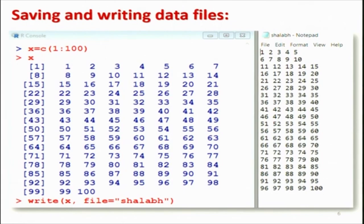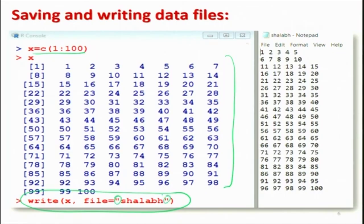Let's look at our console and show you a screenshot of what happens. First, you change the working directory. After that, we generate the value of x — the value of x is 1 to 100. Then we write: write(x, file="shalabh"). When you look in your folder, a file named shalabh will appear, and the values will be stored in it.